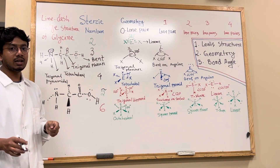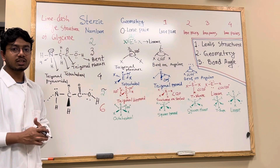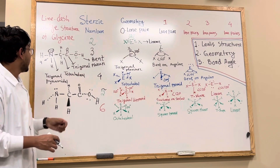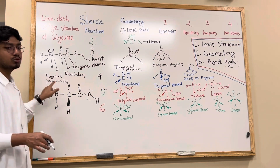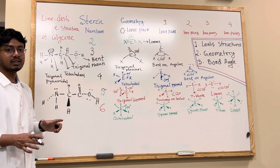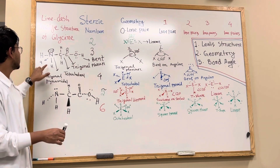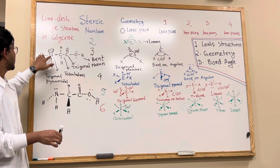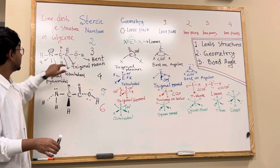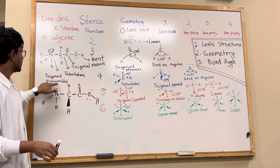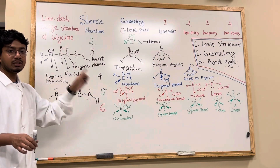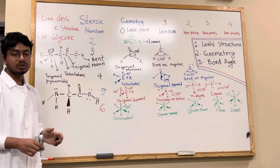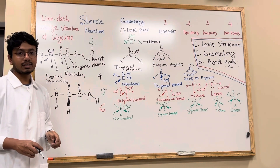You can consider this as the Lewis structure of glycine. Finally, you can see how to determine the structure: first, determine the geometry of each central element, and then rearrange them into the full 3D structure.